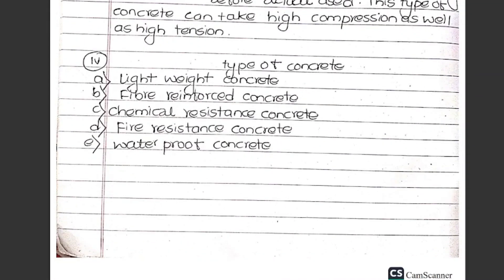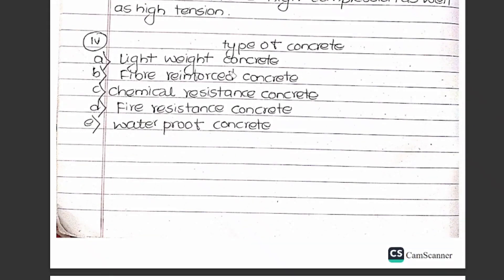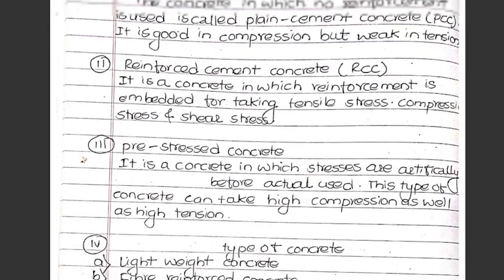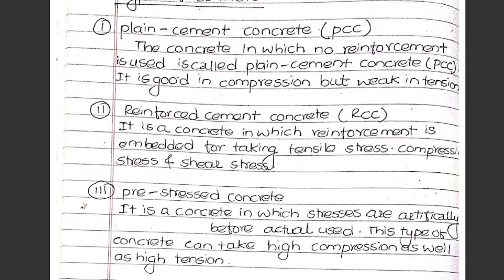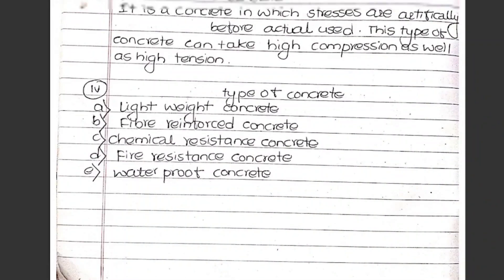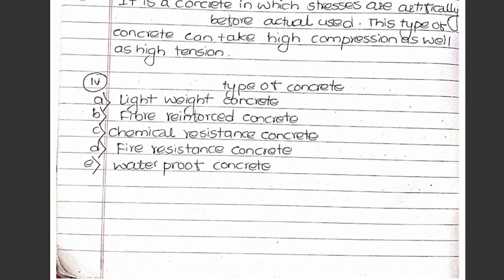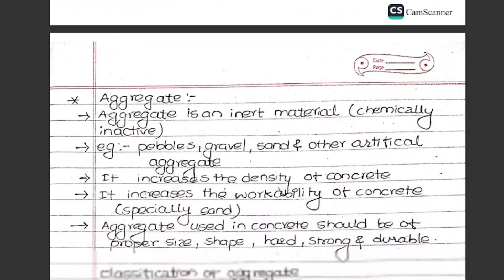Other types of concrete include lightweight concrete, fiber reinforced concrete, chemical resistant concrete, fire resistant concrete, and waterproof concrete. In exams, the main types to define are PCC, RCC, and pre-stressed concrete; note down the other types as well. The next video will cover the next topic.